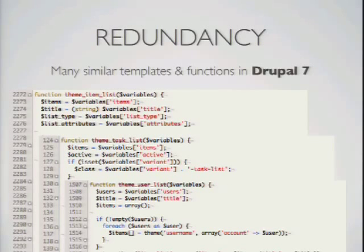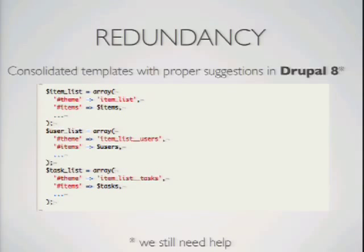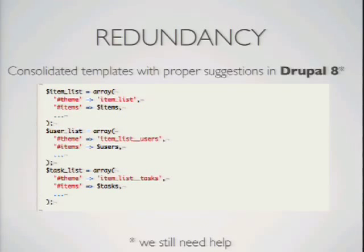Coming back to redundancy: we have many things — templates and theme functions — that output almost the exact same thing. We want to consolidate them and use actual theme suggestions, which is something we've had in core for a long time but never really leveraged. If you're creating an item list, whether it's of users or tasks, we can just use the same template, because you can still override each individually. For example, 'item-list-users.html.twig' would override just that bit of markup.